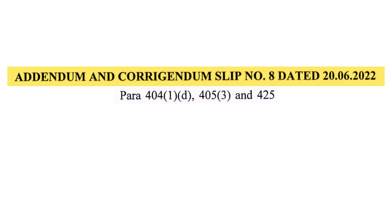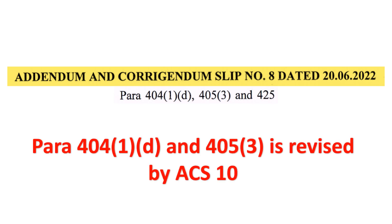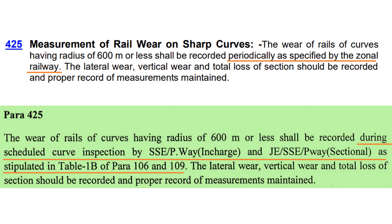Let's see the changes done by ACS 8 in para 425. Previously, para 425 stated that the BR of rail on a curve having radius of 600 meters or less shall be recorded periodically as specified by the General Railway. But now, no General Railway specification schedule of inspection is needed. This inspection will be done with the scheduled inspection of the curve, which is already described in table 1B of para 106 and 109. Other contents of this para are unaffected.